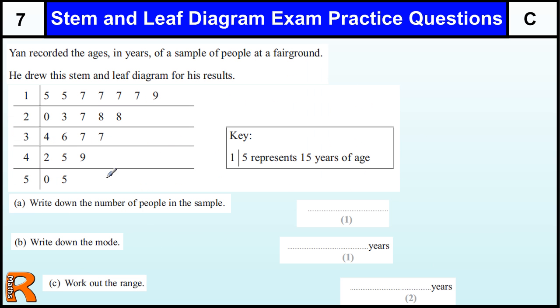One which is drawn for us, and it's got a key. So 1 slash 5 represents 15 years of age. Write down the number of people in the sample. You're not told how many people there are, but each one of these numbers on the right-hand side, the leafs of the stem and leaf diagram, represent one person or thing. So 1, 2, 3, 4, 5, 6, 7, 8, 9, 10, 11, 12, 13, 14, 15, 16, 17, 18, 19, 20, 21. So I think there's 21. But I always check. 1, 2, 3, 4, 5, 6, 9, 10, 11, 12, 13, 18, 19, 20, 21. Always best to check.